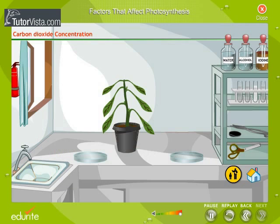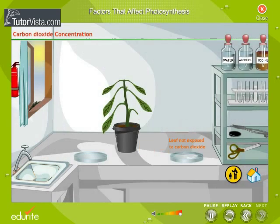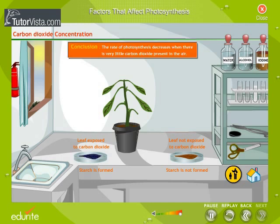Keep a potted plant in the dark for a day — no starch will be formed in the leaves due to lack of sunlight. Insert a leaf of the plant in a bottle containing caustic potash. If the leaf is tested for the presence of starch the next day, it will not show the presence of starch, as the carbon dioxide in the air was absorbed by the caustic potash in the bottle and was not available to the leaf for photosynthesis. Any other leaf from the plant would show the presence of starch. The rate of photosynthesis decreases when there is very little carbon dioxide present in the air.